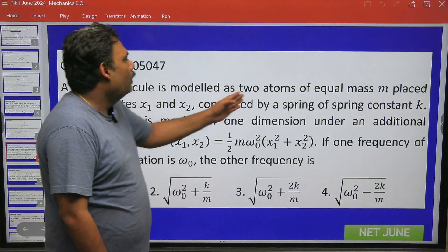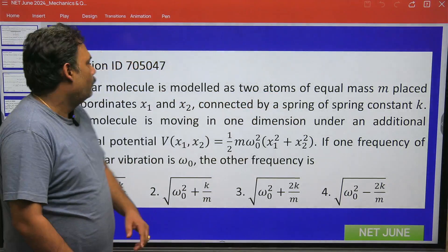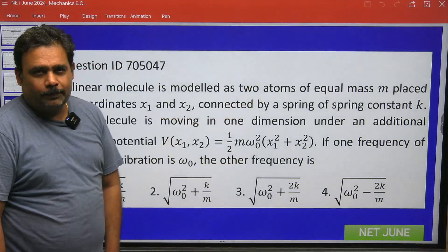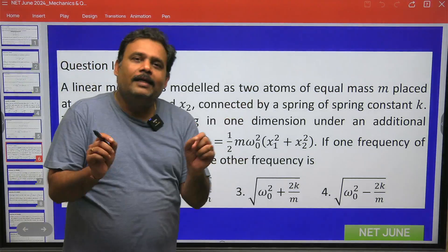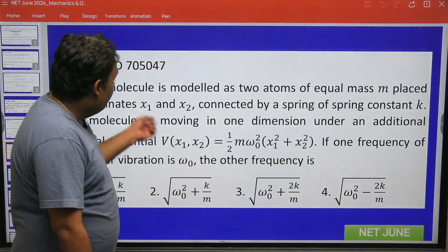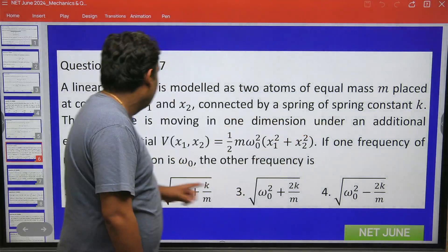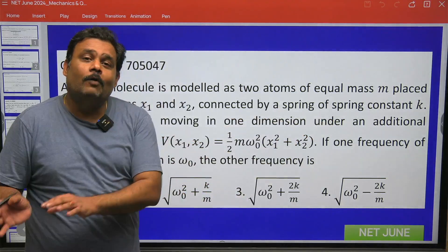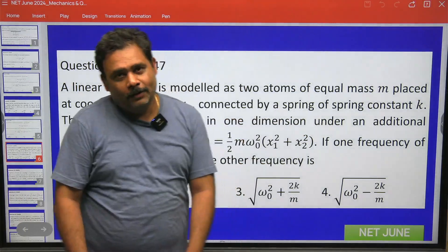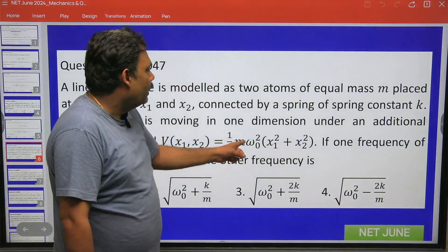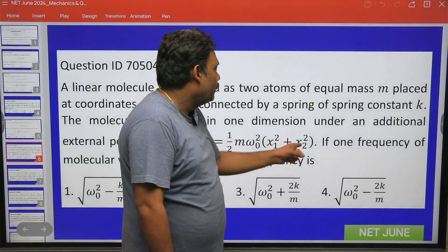The linear molecule is modeled as two atoms of equal mass m placed at coordinates x₁ and x₂, connected by a spring of spring constant k. The molecule is moving in one dimension under an additional potential. There is one more potential given in this system: V(x₁,x₂) = ½mω₀²(x₁² + x₂²).